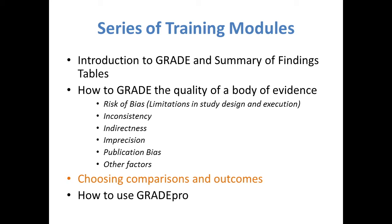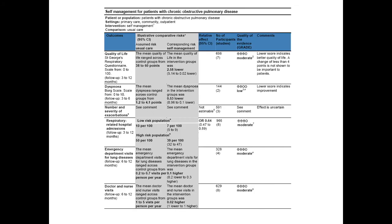This module describes the process of choosing comparisons and outcomes for a summary of findings table. Before we go into the details about how to choose comparisons and outcomes, we wanted to remind you about the overall structure of the summary of findings table. The introductory module describes the table in more detail, however I wanted to point out the sections of the table covered in this module.